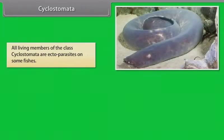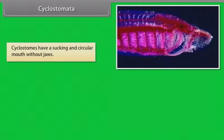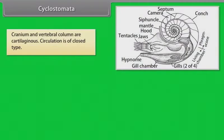Cyclostomata. All living members of the class Cyclostomata are ectoparasites on some fishes. They have an elongated body bearing six to fifteen pairs of gill slits for respiration. Cyclostomes have a sucking and circular mouth without jaws. Their body is devoid of scales and paired fins. Cranium and vertebral column are cartilaginous. Circulation is of closed type.